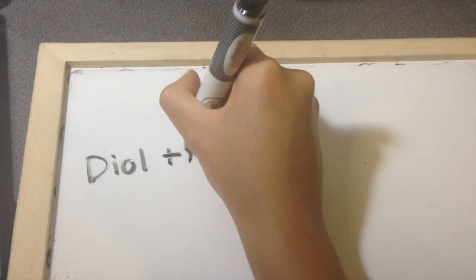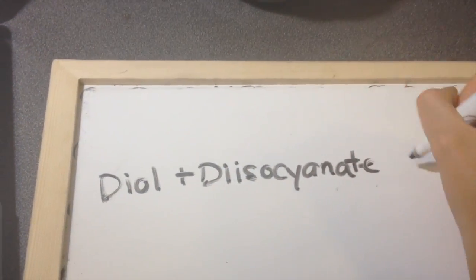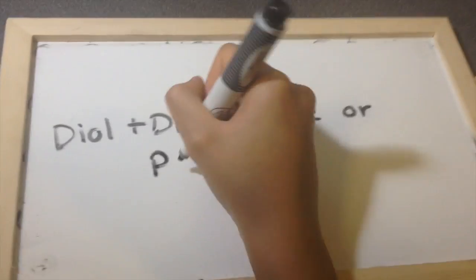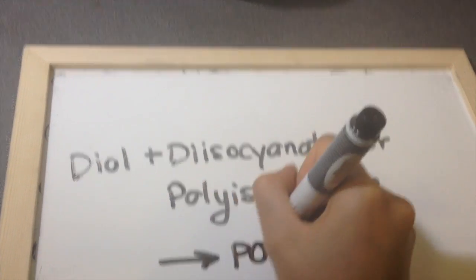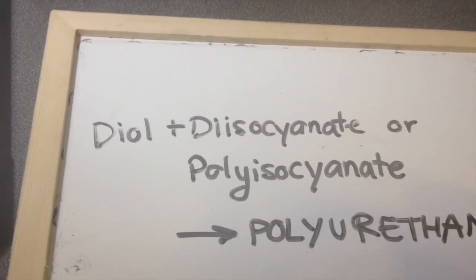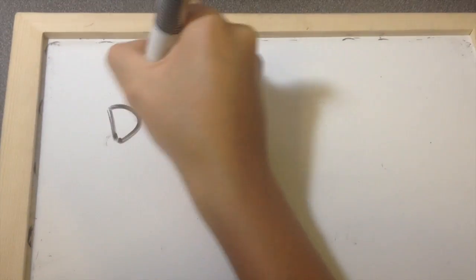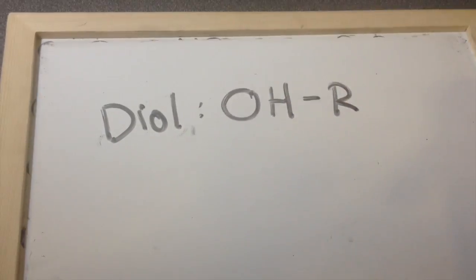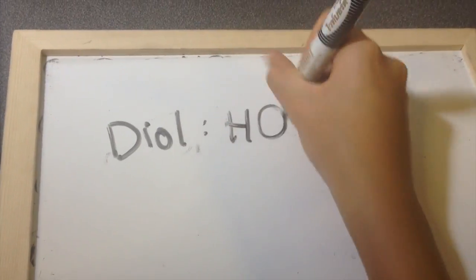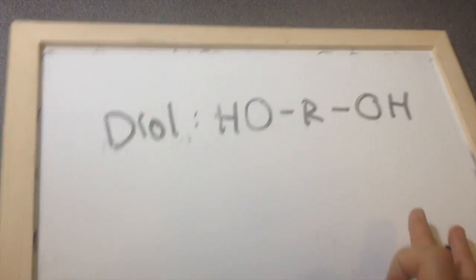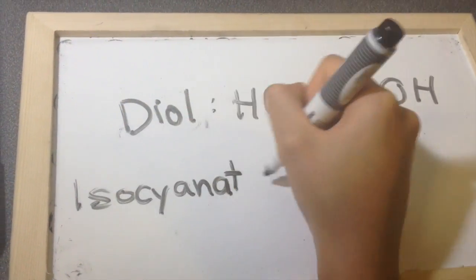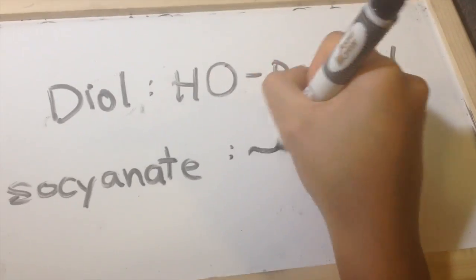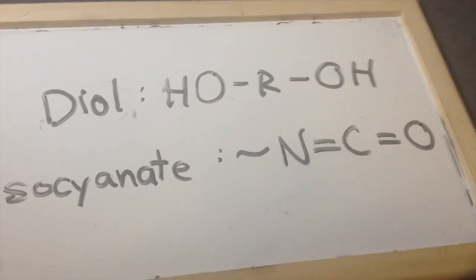Polyurethanes are formed by a diol and the monomers of diisocyanate or polyisocyanate. Diol is an alcohol that contains more than one OH group, and the monomers of diisocyanate or polyisocyanate are the functional groups with the formula NCO, where a nitrogen atom links with a carbon atom by a double bond and the carbon atom links with the oxygen atom also by a double bond.